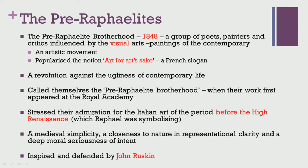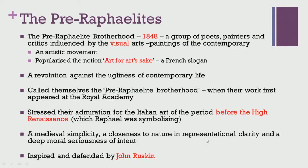The term 'Pre-Raphaelite Brotherhood' was first used when their work appeared by the middle of the 19th century, and it stresses their admiration for Italian art of the period before the high Renaissance. It is not the art of Raphael's period which fascinated them, but the art that existed before the high Renaissance symbolized by the great artist Raphael. Accordingly, they celebrated a medieval simplicity and closeness to nature, representational clarity, and a deep moral seriousness of intent.